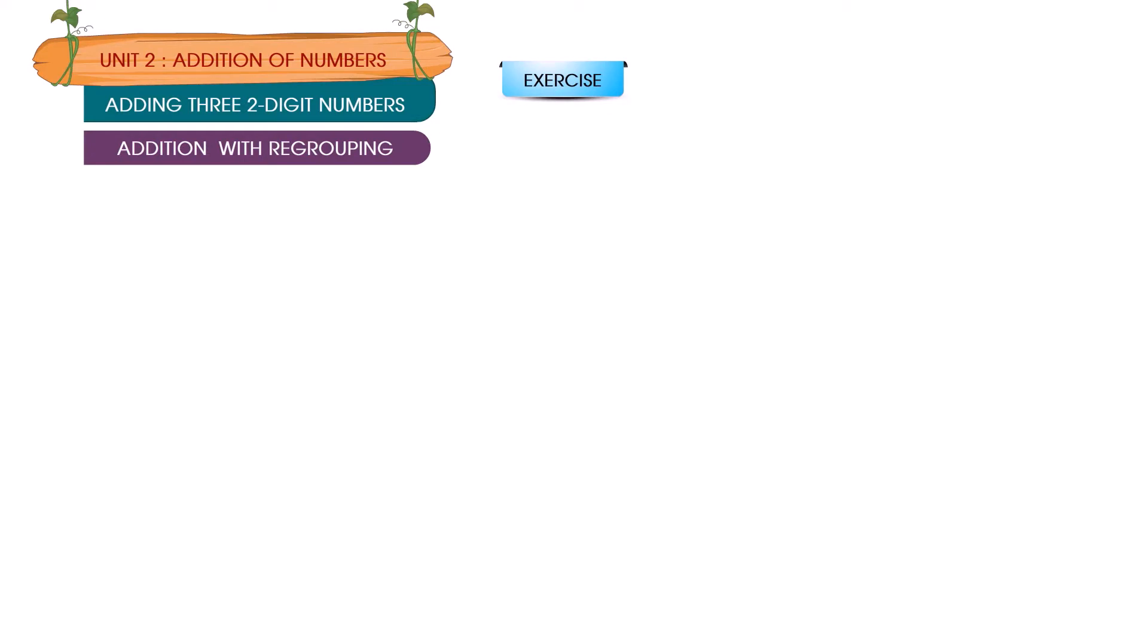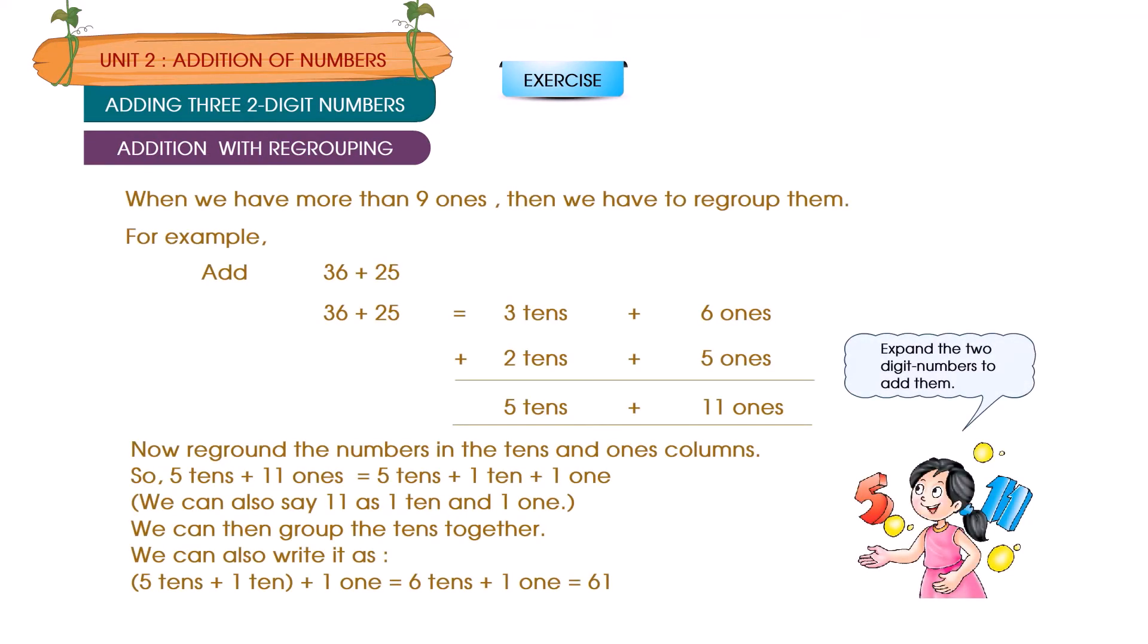Addition with regrouping. When we have more than nine ones, then we have to regroup them. For example, add 36 plus 25. 36 plus 25 is equal to 3 tens plus 6 ones, plus 2 tens plus 5 ones, equals 5 tens plus 11 ones.